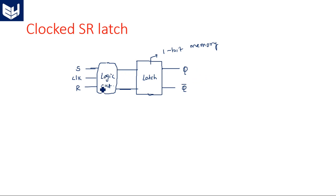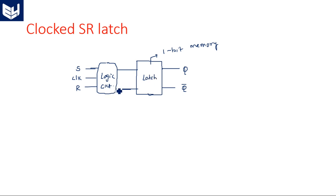We have a logic circuit where we are applying the input signals S, R, and clock. The output of this logic circuit has two gates: the output of the first gate is connected to the input of the first gate in the latch, and the output of the second gate is connected as the input of the second gate in the latch.